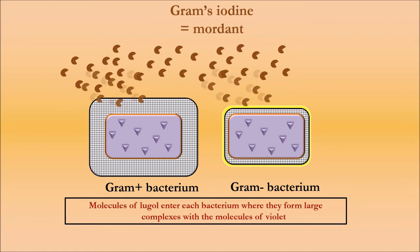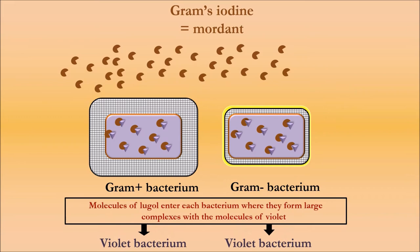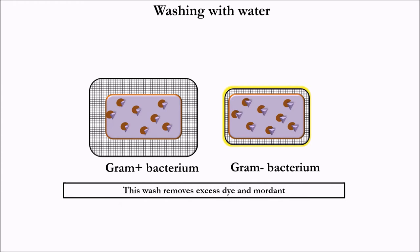The molecules of lugol enter each bacterium, where they form large complexes with the violet molecules. Washing with water then removes excess dye and mordant. If we stopped the staining here, we would observe purple bacteria under the microscope whatever the nature of their wall.